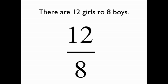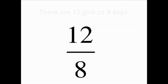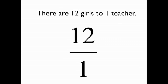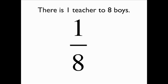There are 12 girls to 8 boys. The 12 to 8 ratio becomes 12 divided by 8. There are 12 girls to one teacher. The ratio of 12 to 1 becomes 12 divided by 1. There is one teacher to 8 boys. The ratio of 1 to 8 becomes 1 over 8.